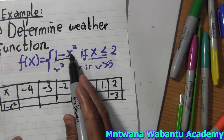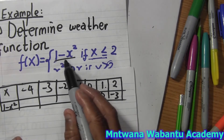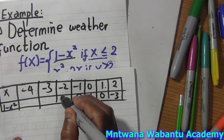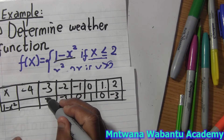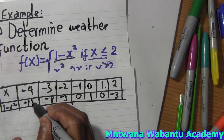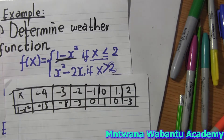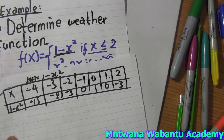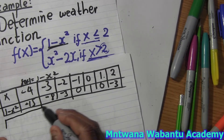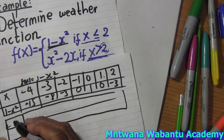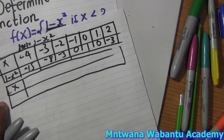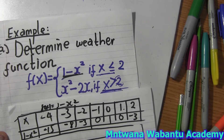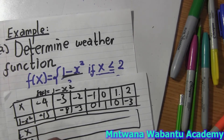This is the graph of a parabola — 1 - x² — which is part of the step function. Now let's do the table of values for the second piece, x² - 2x, for x greater than or equal to 2.